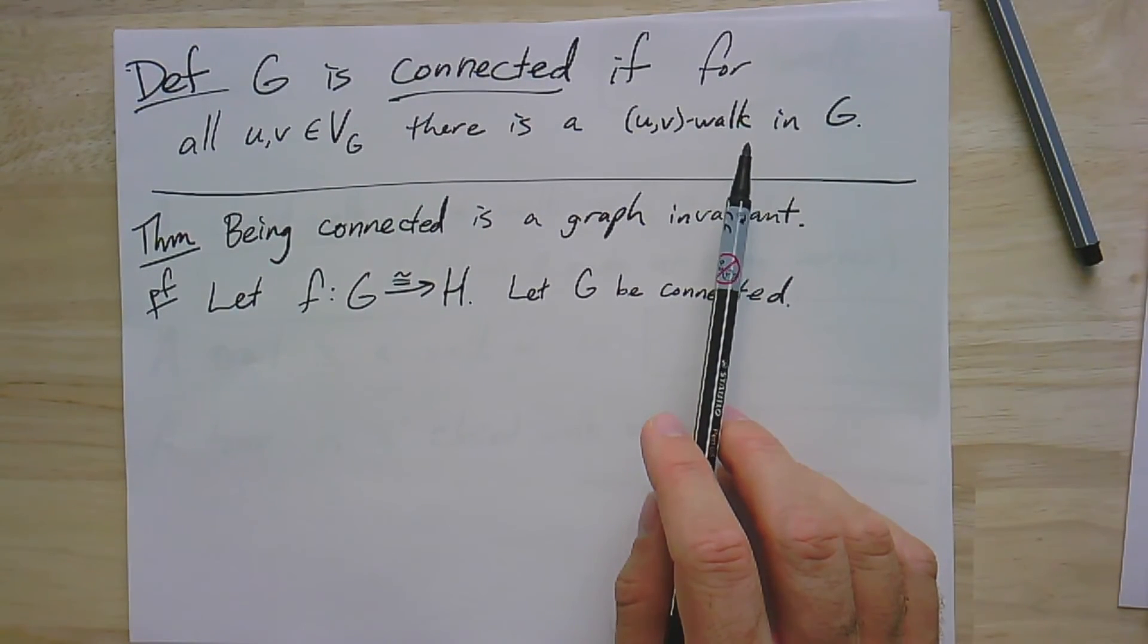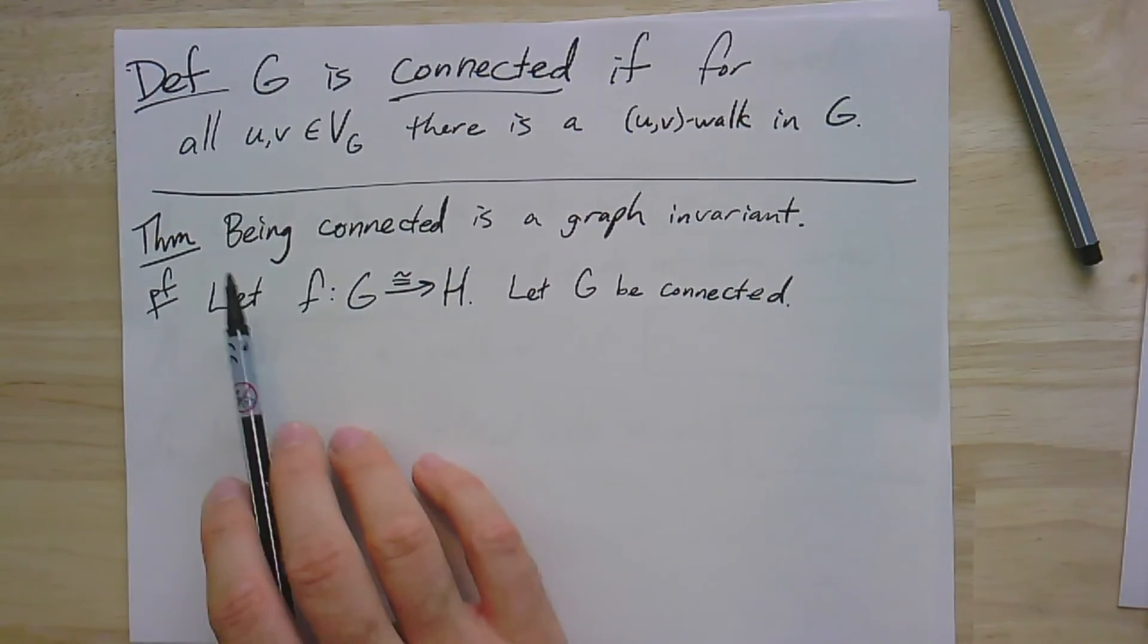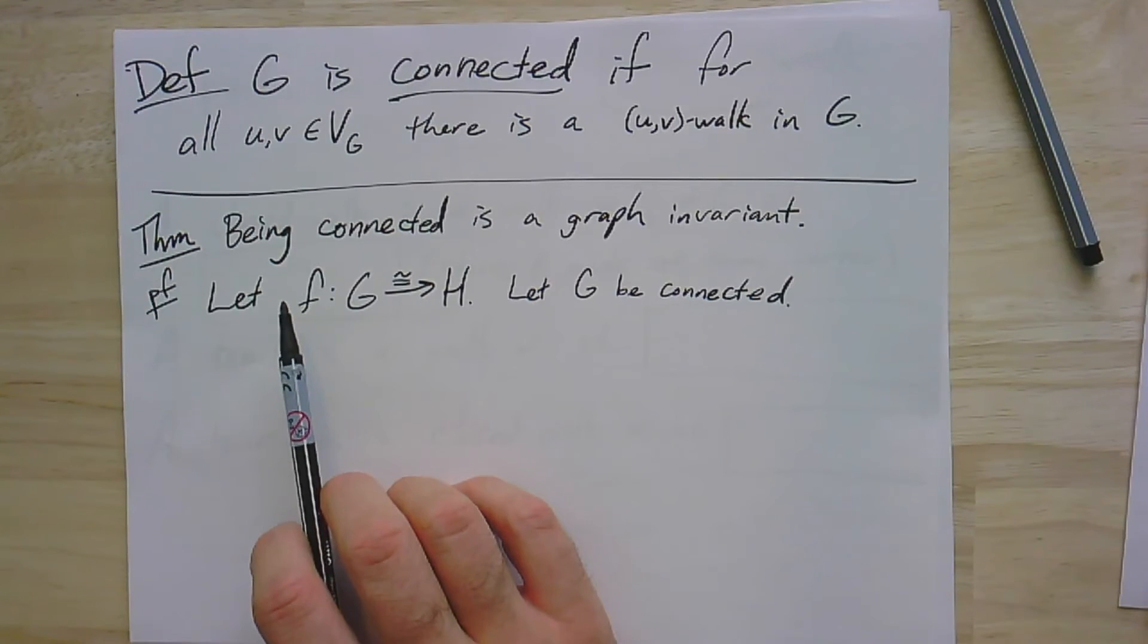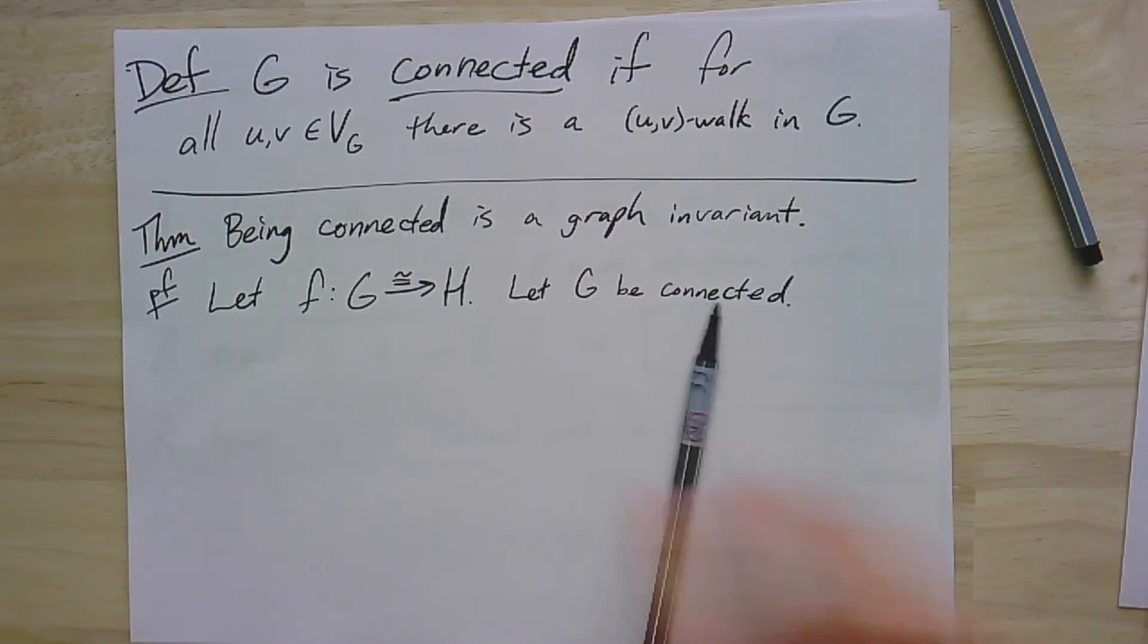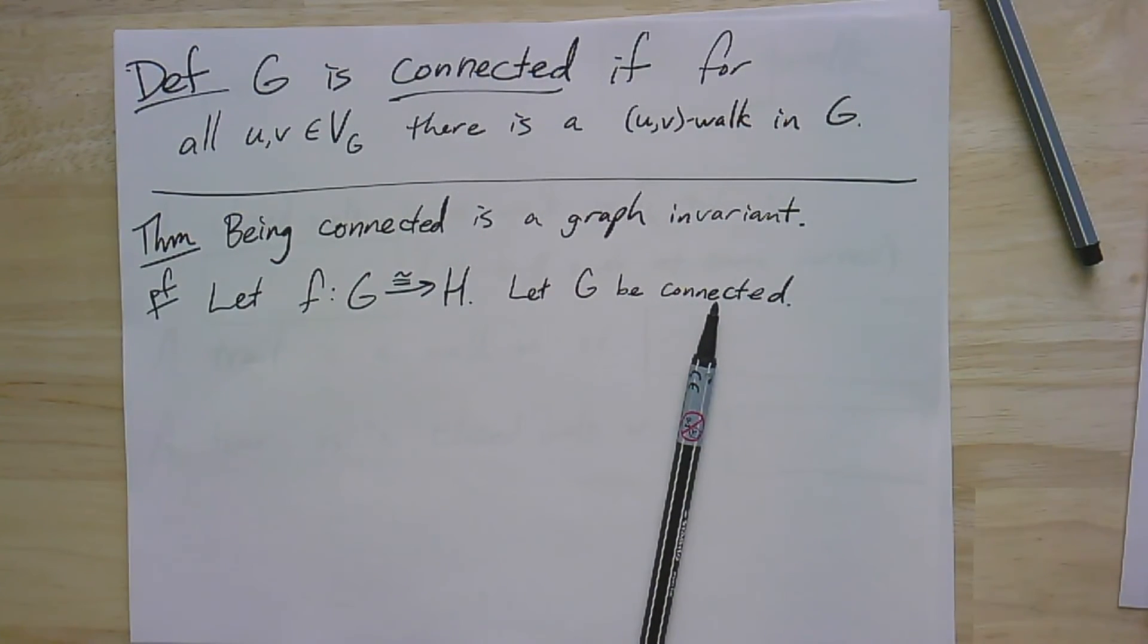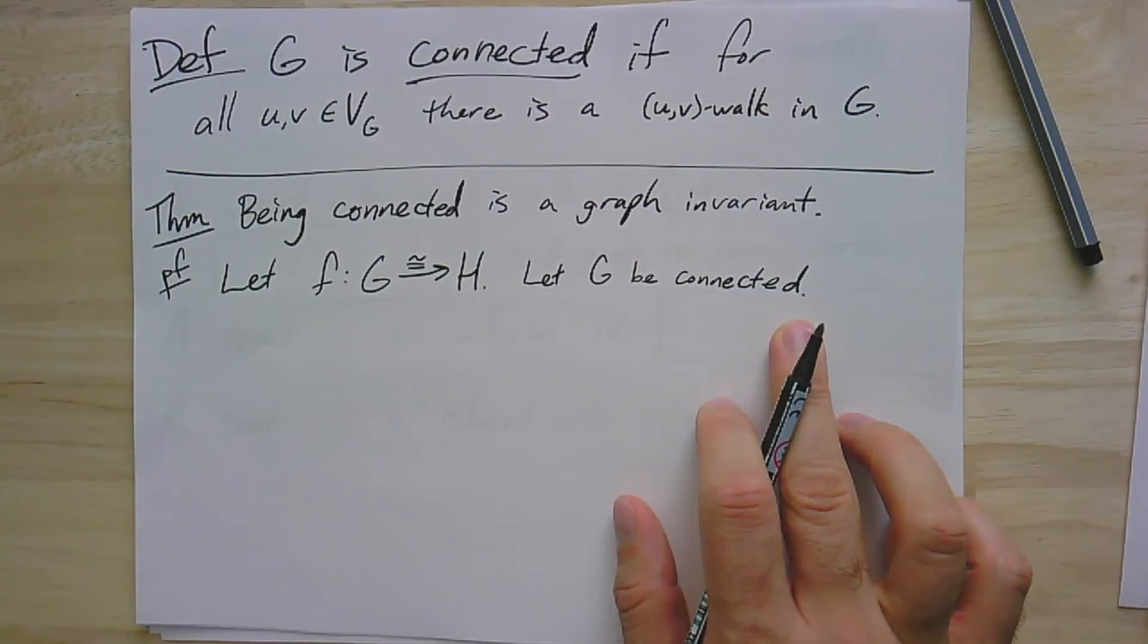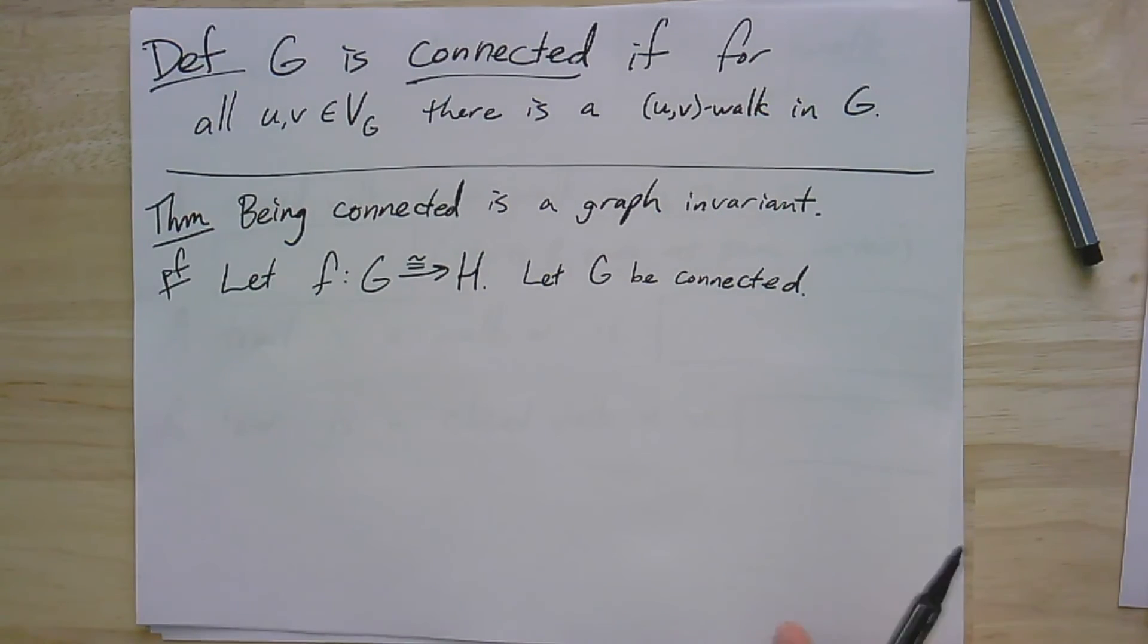Allow for walks of length zero. A vertex will be connected to itself. And here's an important theorem about connectivity. And it's one that becomes kind of obvious from pictures. But if you want to prove it rigorously, you've got to think just a bit, is that being connected is a graph invariant. So if you have a graph that's connected and another graph that's isomorphic to it, that other graph is also connected. If we're going to prove it, let's do it. So let's suppose we have this isomorphism and G is connected. I want to prove that H is connected. I'll leave the converse as an exercise.